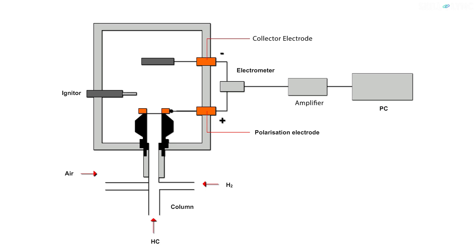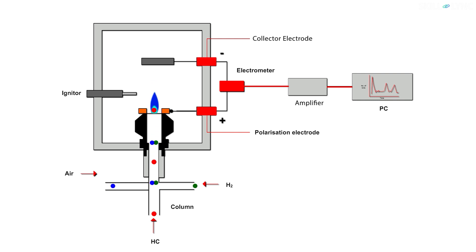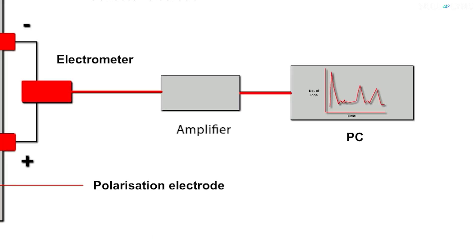Now, let's see how this works. Hydrogen and air are let inside the burner through the respective passages and then the igniter ignites a flame. At this time, the flame will be free from ions. But when a sample gas containing hydrocarbons is introduced through the column, the carbon atoms ionize in the flame and start moving towards the negative electrode. The flow of ions induces an electric current which is measured by the electrometer and amplified in the amplifier. The signal from the amplifier is then fed into the computer which shows the result in the form of an analog display.